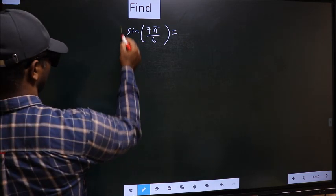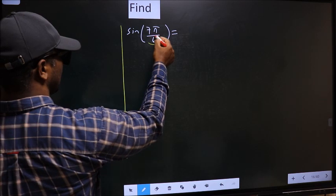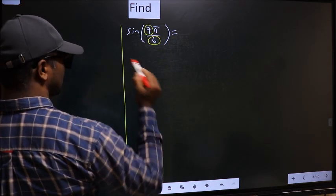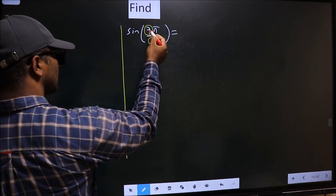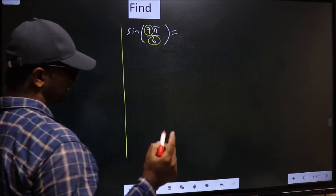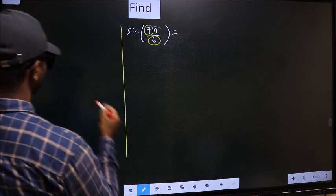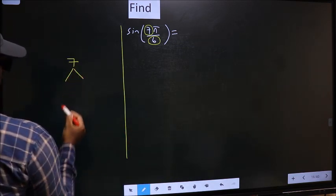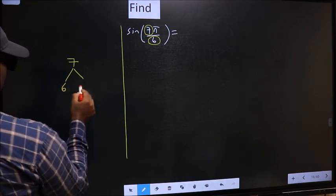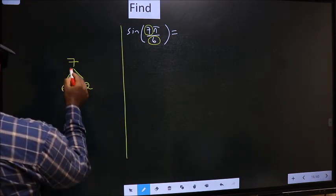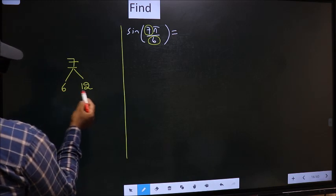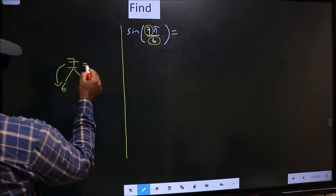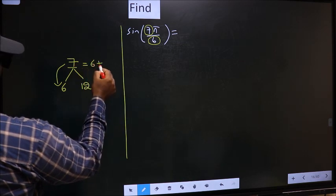See, here we have 6 and here 7. Now you should look: 7 is close to which multiple of 6. What I mean is, 7 and now here you write multiples of 6, that is 6 and 12. Now 7 is close to which multiple? This is close to 6. So 7 should be written as 6 plus 1.